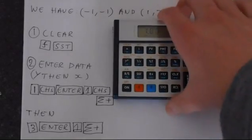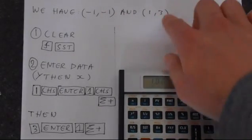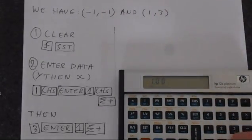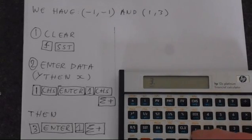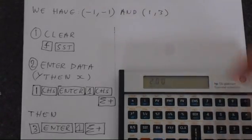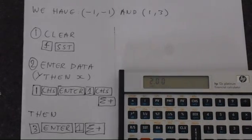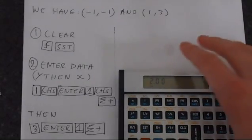So then we're going to enter 3, which is our y value. 3 is on the y here. So we're going to just 3, Enter, 1, and then sigma plus. And you see this goes up to 2, so it's incremented that, telling us that we've got 2 data points.